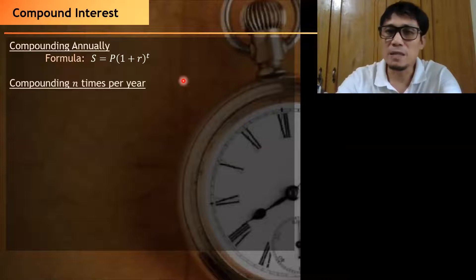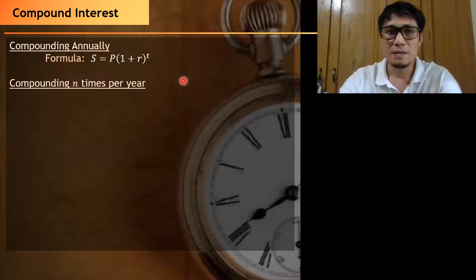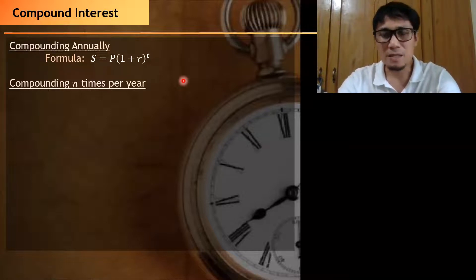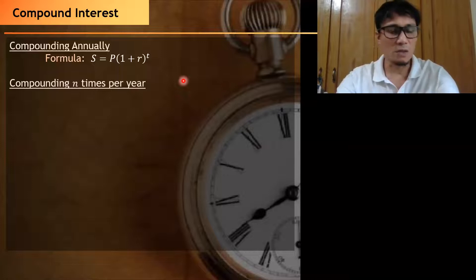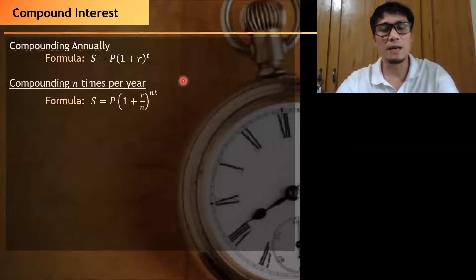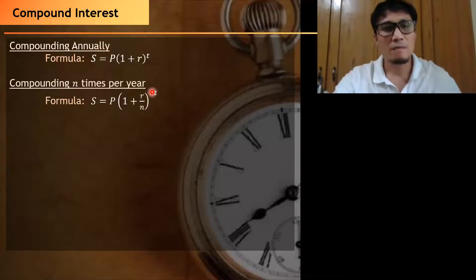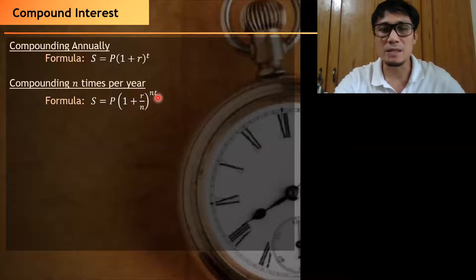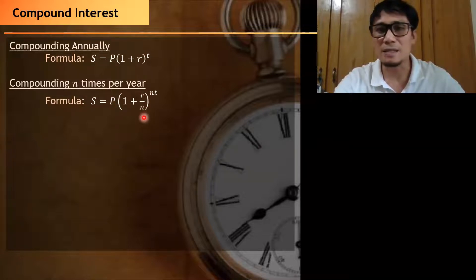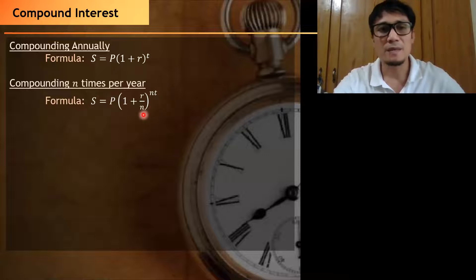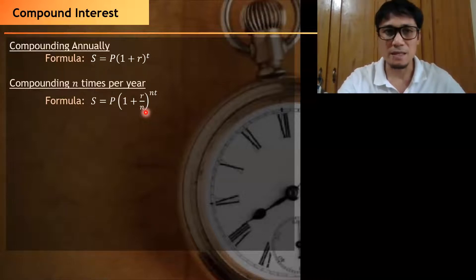The second case is when compounding is done several times in a year. If it is done several times in a year, then we compute the total amount using the formula: S equals P times one plus R over N, quantity raised to NT. Here, P is the principal amount, R is the rate of interest, T is the time, and N refers to the number of times compounding is done in a year.